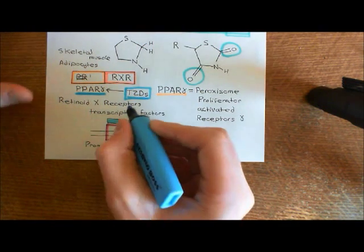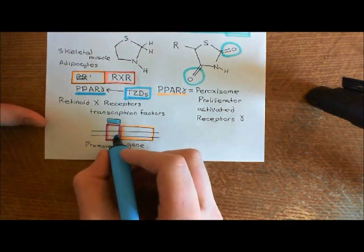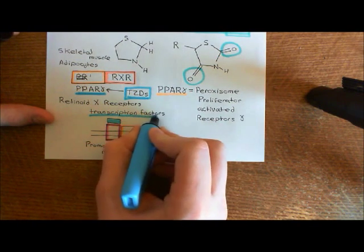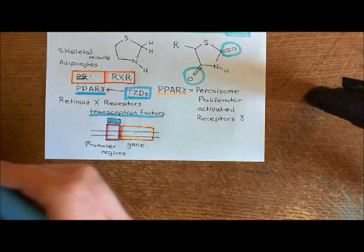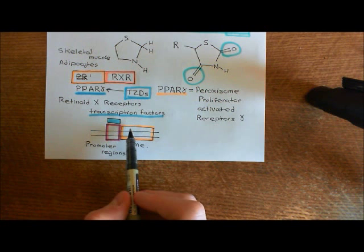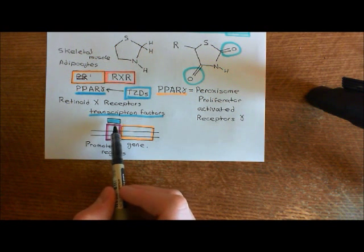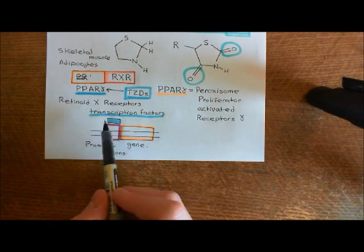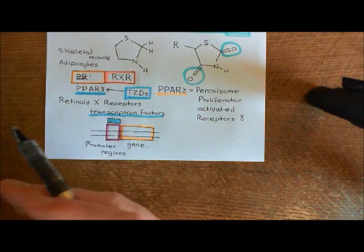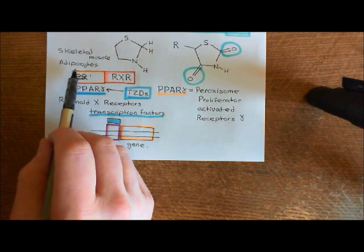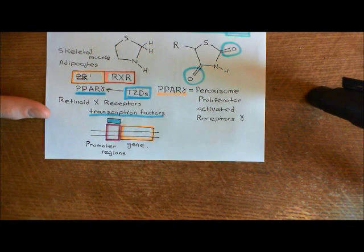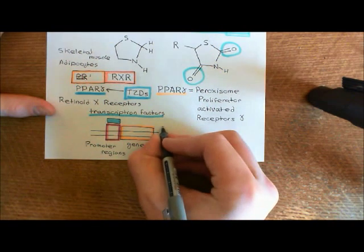A certain transcription factor will bind to a huge number of promoter regions. To some of those it binds to, it will increase the transcription of the downstream gene, and to others it will decrease the transcription of the downstream gene. So basically, activating a transcription factor is going to change gene expression within these skeletal muscle cells and within these adipocytes. Now let's talk about what's going to happen in both the skeletal muscle cells and the adipocytes.